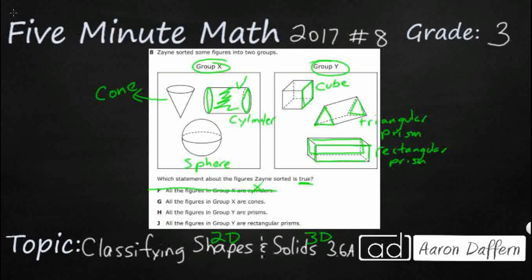All the figures in Group X are cones. Well, that's also not going to be correct. This is a cone. It's got one round flat surface like a cylinder, but it also has a vertex. And the other two do not. The sphere has no flat round surfaces, cylinder has two, and none of them have a vertex, which means they cannot be cones.